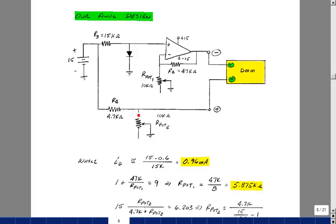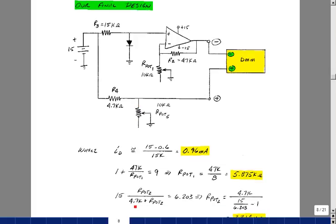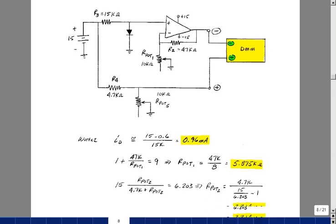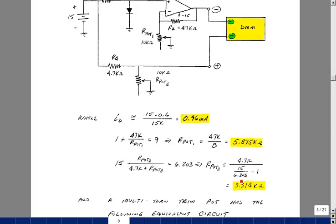And then the voltage divider here, this resistance over 4.7k plus that resistance times 15 needs to be 6.203. So again, I could solve for the value of this potentiometer. It turns out to be about 3.314k. So again, I could probably use a 10k pot to get the value that I need because I can't get this exactly out of the parts cabinet. So I'll have to adjust this a little bit depending on the actual temperature coefficient of the diode so I can get two points because I've got a straight line relationship.